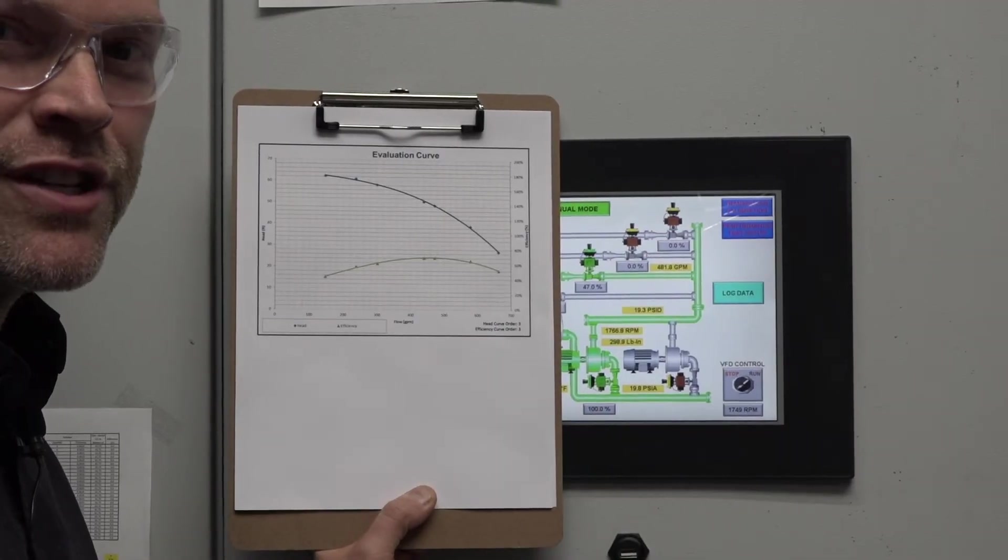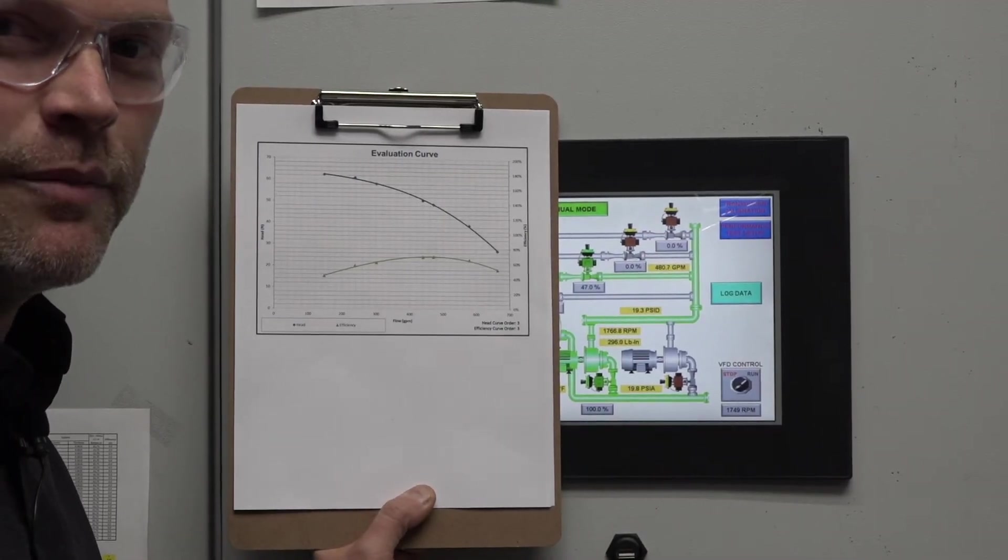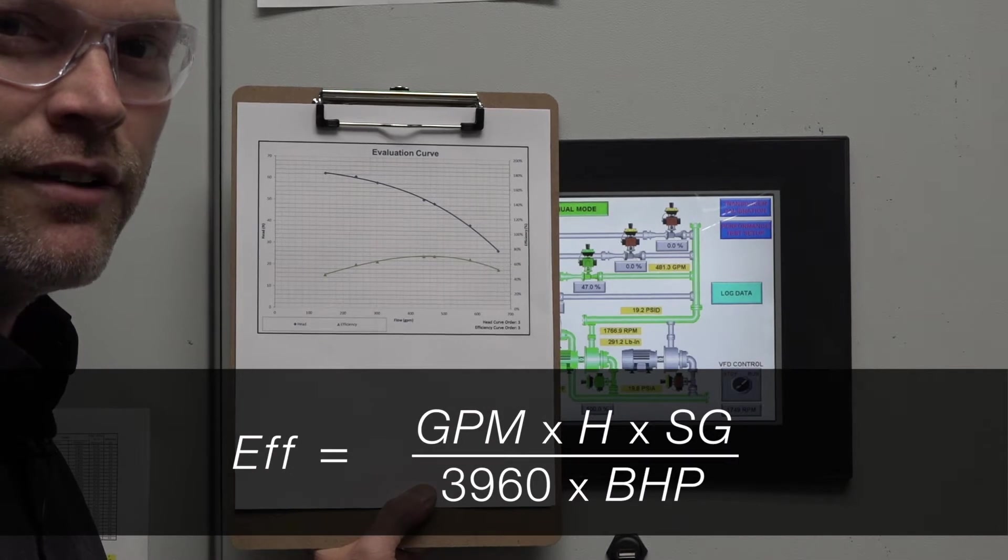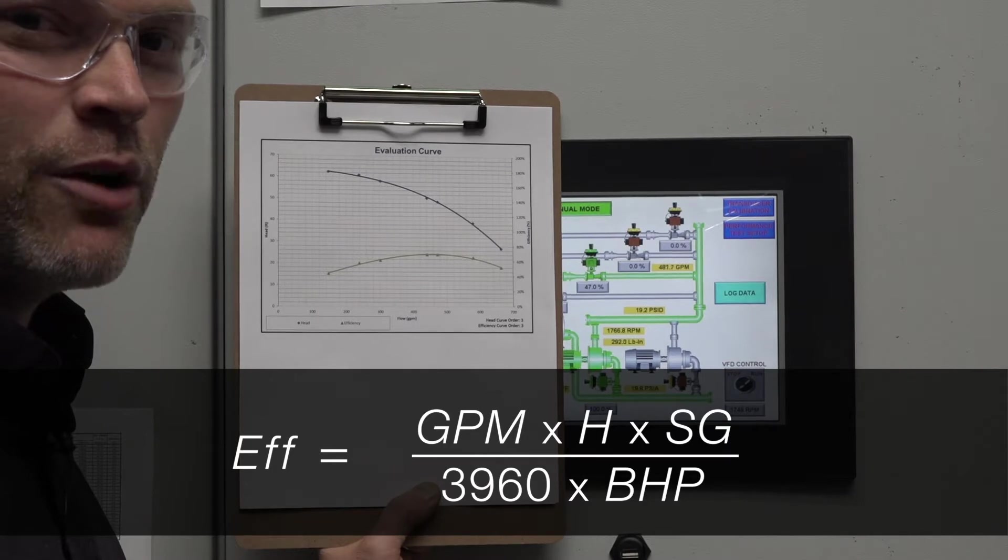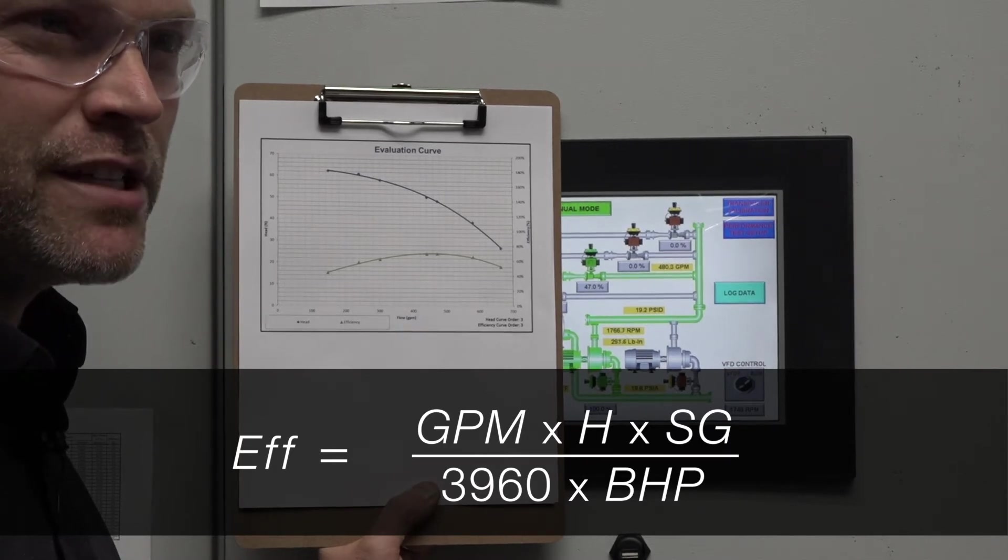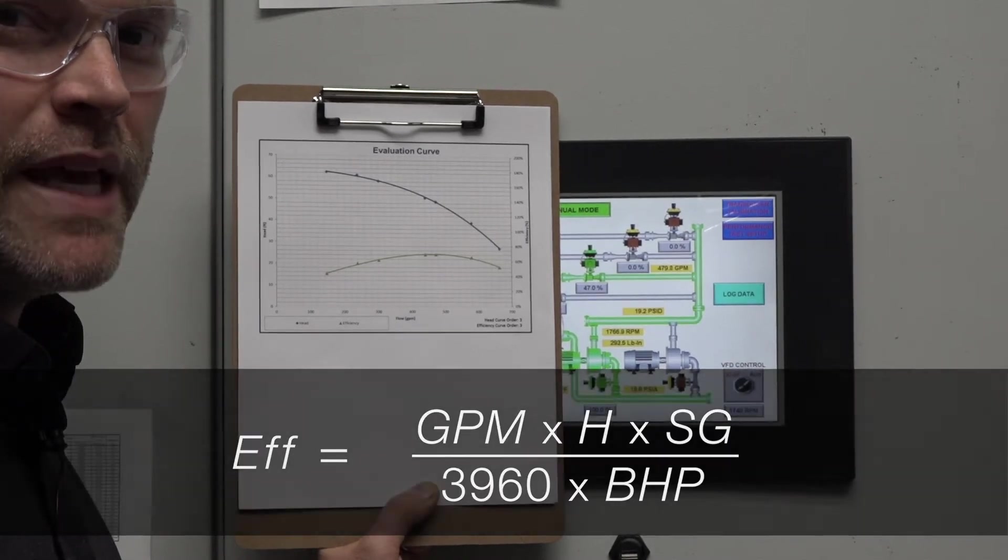Pump efficiency is calculated based on head, flow, specific gravity, and horsepower. Today we're talking specifically about best efficiency point or BEP.